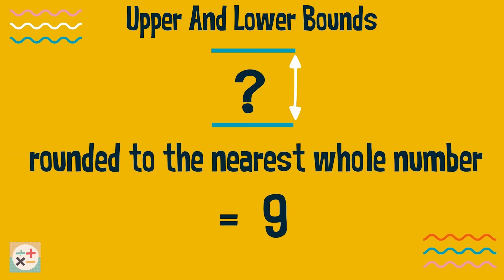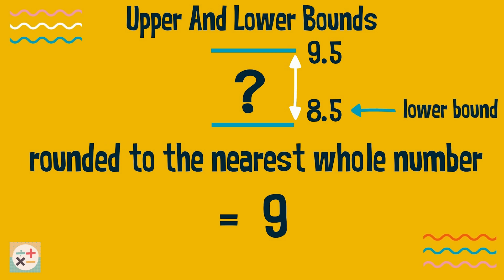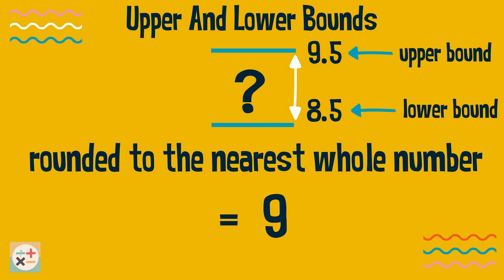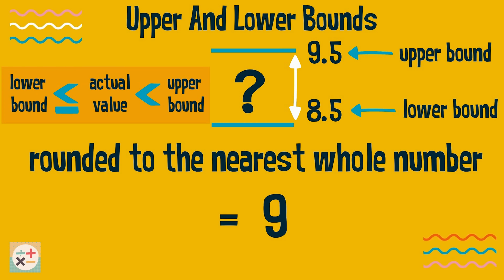Let's look at this number, which has been rounded to the nearest whole number. The lower bound is the smallest value that would round to the estimated value. The upper bound is the upper limit — it shows the value that would round up to the next estimated value. The actual value could be between the lower bound of 8.5 and up to, but not including, the upper bound of 9.5.